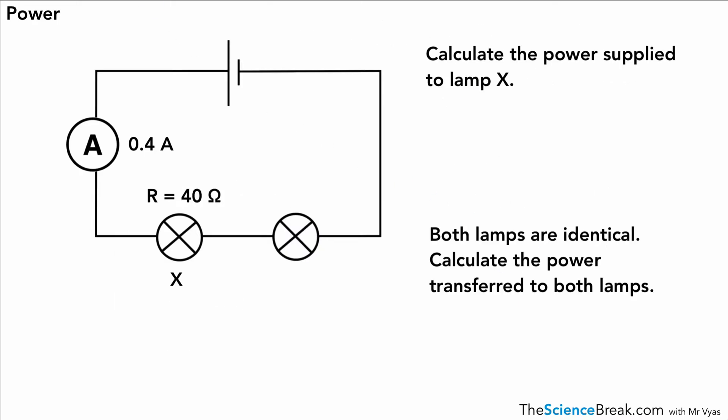Let's have a look at this one here. We've got the power supplied to lamp X. We want to calculate that. So that's lamp X over there. We've got the resistance. We've got the current. So we would use P equals I squared R. Put in the values for that. And it's 0.4 squared times 40. And if you put that into our calculator, we get an answer of 6.4 watts.